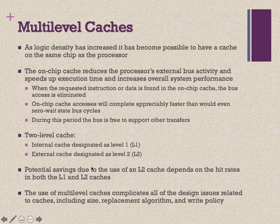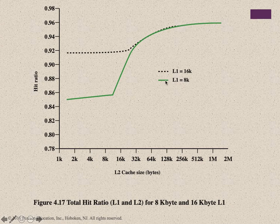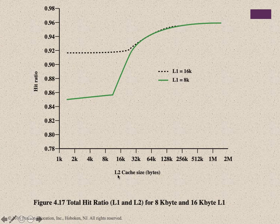In some cases there is also L3 cache. The potential saving from using an L2 cache depends on the hit ratio in both L1 and L2. The use of multi-level caches complicates all design issues related to caches, including size, replacement algorithm, and write policy. This graph shows that if we have a smaller L2 cache the hit ratio is small, and this line shows performance for L1 versus L2 cache size — with L1 at 16KB.